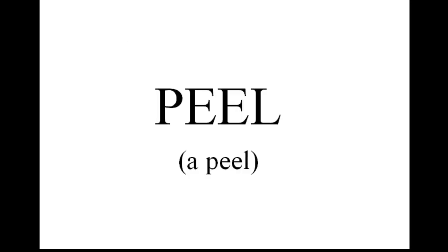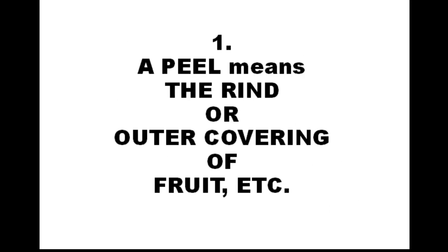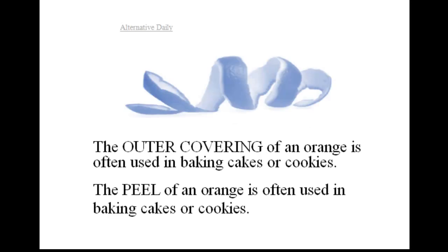Peel. A peel means the rind or outer covering of fruit. The outer covering of an orange is often used in baking cakes or cookies. The peel of an orange is often used in baking cakes or cookies.